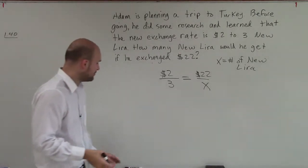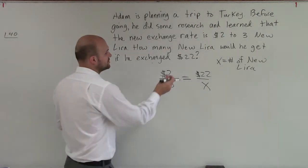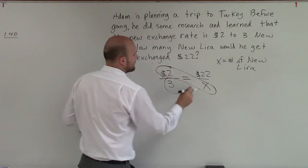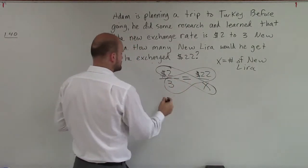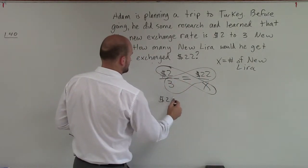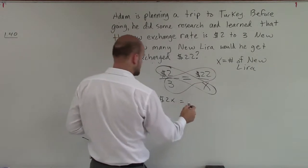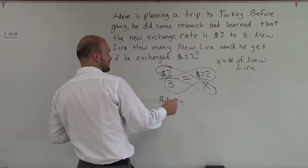Now I have a proportion. So to solve proportions, I can use cross multiplication. Therefore, I have 2x equals 66.